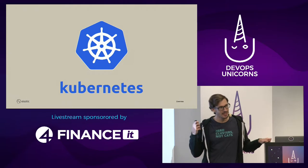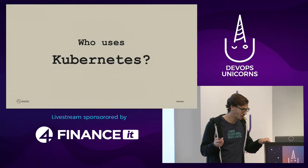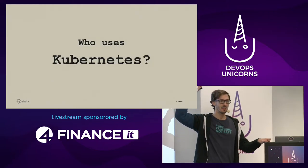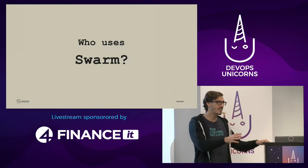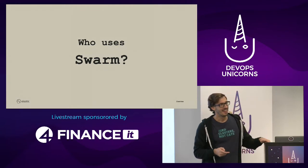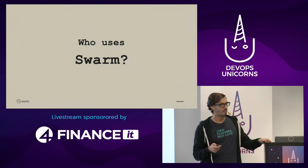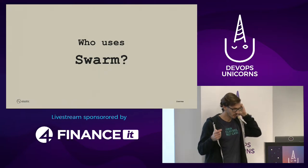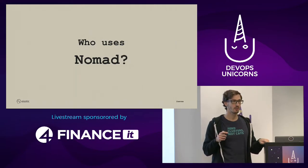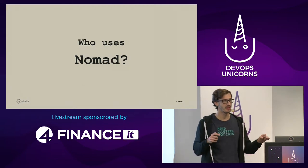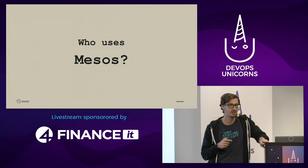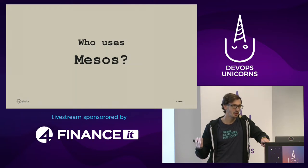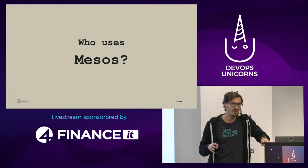For production, everybody is gravitating towards Kubernetes. Who already uses Kubernetes? Who uses Swarm? Is anybody still on Swarm — are you planning to migrate or happy with it? Is anybody using Nomad from HashiCorp? Anybody using Mesosphere? No — which is probably a good thing, because the company behind it is doing Kubernetes now as well. Mesosphere is an Apache project so it'll be around forever, but even the company behind it has kind of moved on.